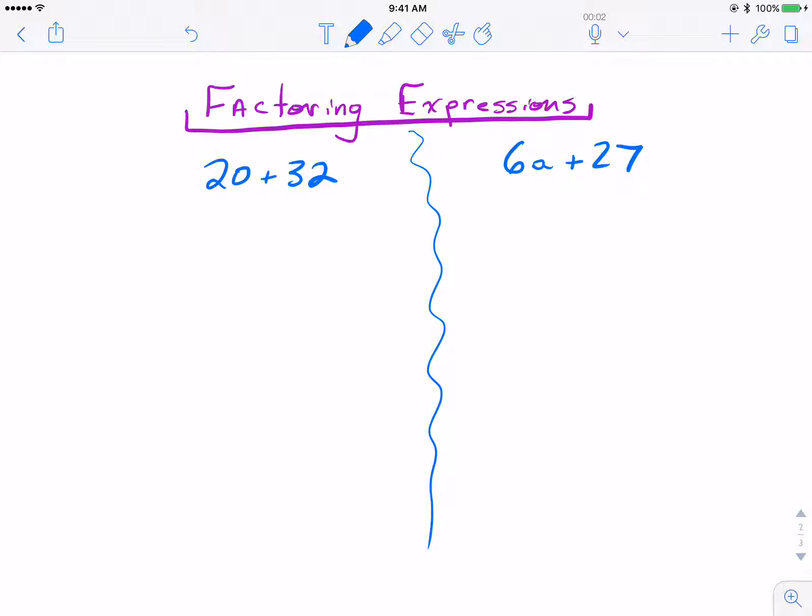On the left, just a simple sum of two whole numbers, 20 and 32, and on the right, something containing a variable. Both are going to be similar, obviously the variable we have something extra to take into consideration.